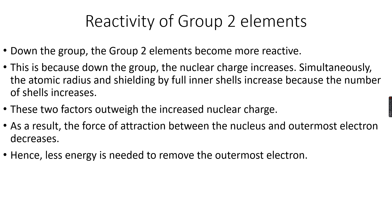As a result, the force of attraction between the nucleus and the outermost electron decreases. If atomic radius and shielding are dominating over nuclear charge, the force of attraction between the nucleus and outermost electron will be lower. Therefore, less energy — the ionization energy — is needed to remove the outermost electron. It becomes easier to remove the outermost electron going down the group, so the reactivity of group 2 elements increases because they lose their electrons more readily.